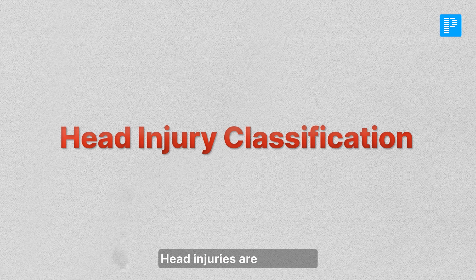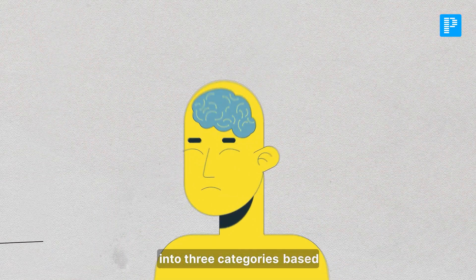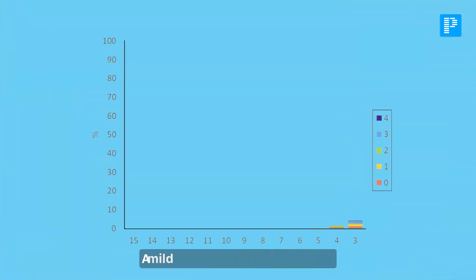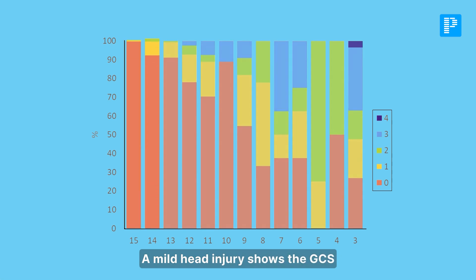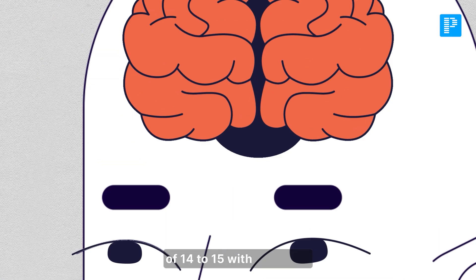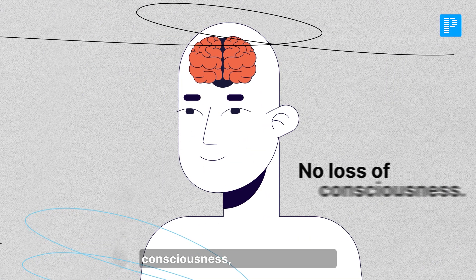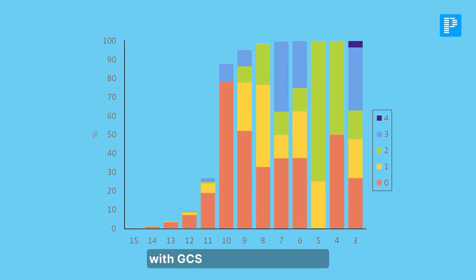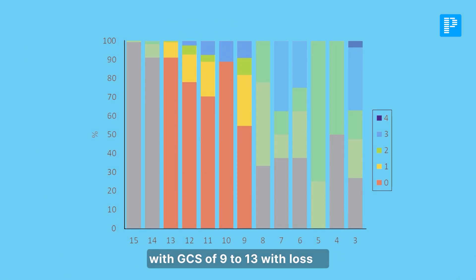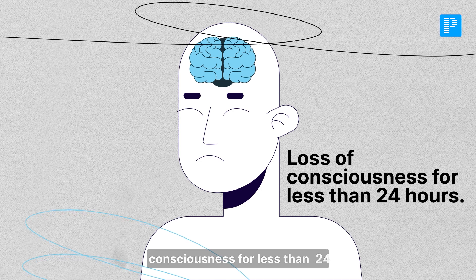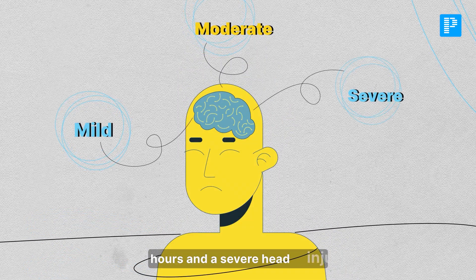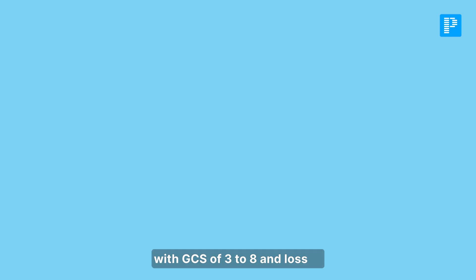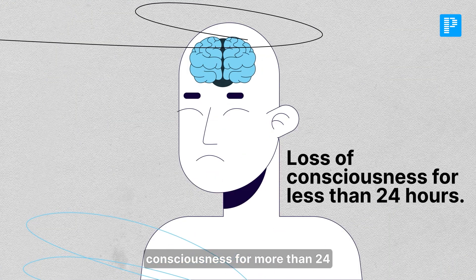Head injuries are classified into three categories based on the Glasgow Coma Scale. A mild head injury shows a GCS of 14 to 15 with no loss of consciousness. A moderate injury has a GCS of 9 to 13 with loss of consciousness for less than 24 hours. A severe head injury has a GCS of 3 to 8 and loss of consciousness for more than 24 hours.